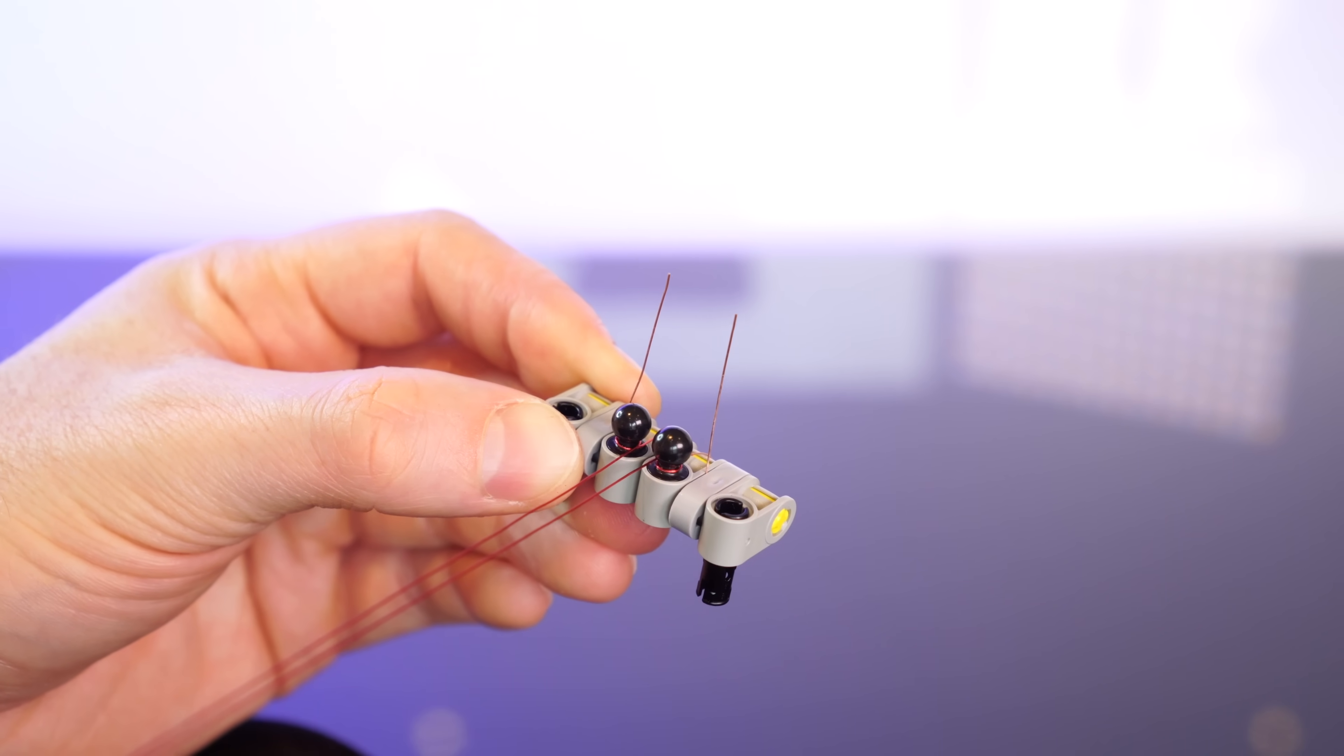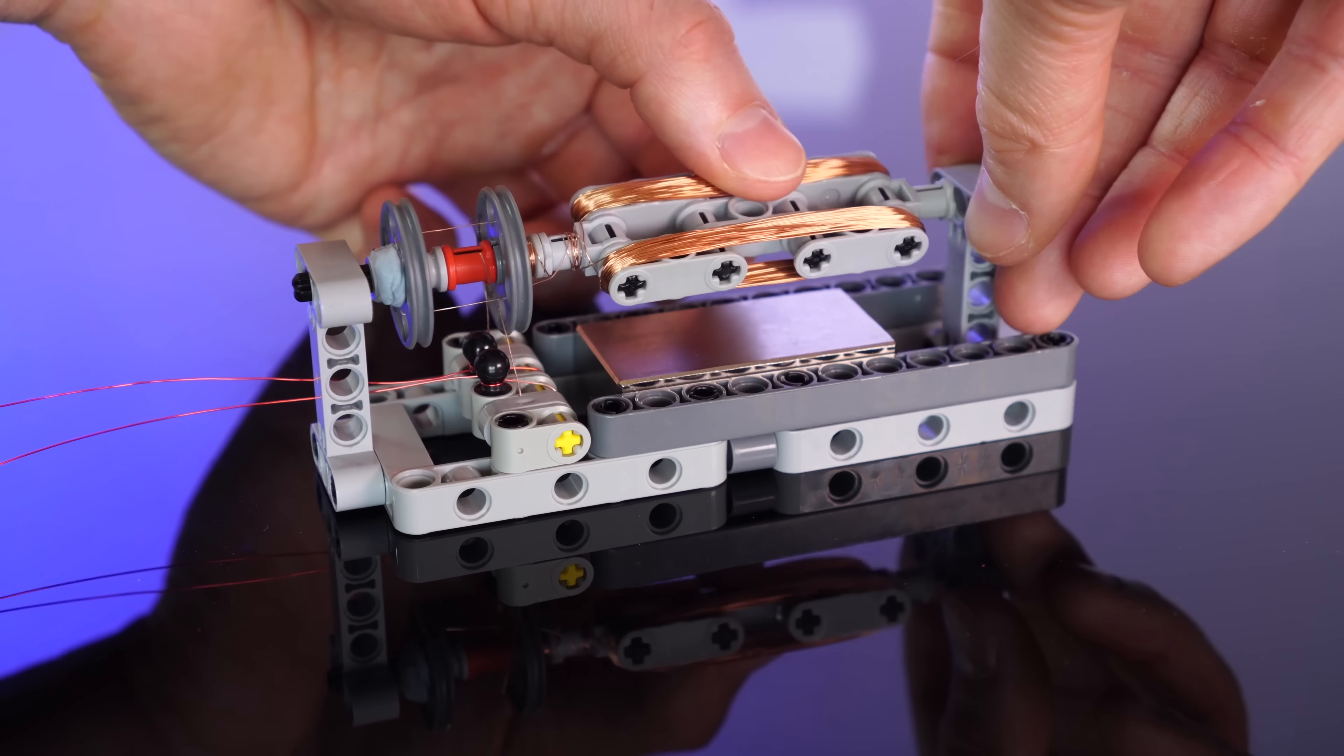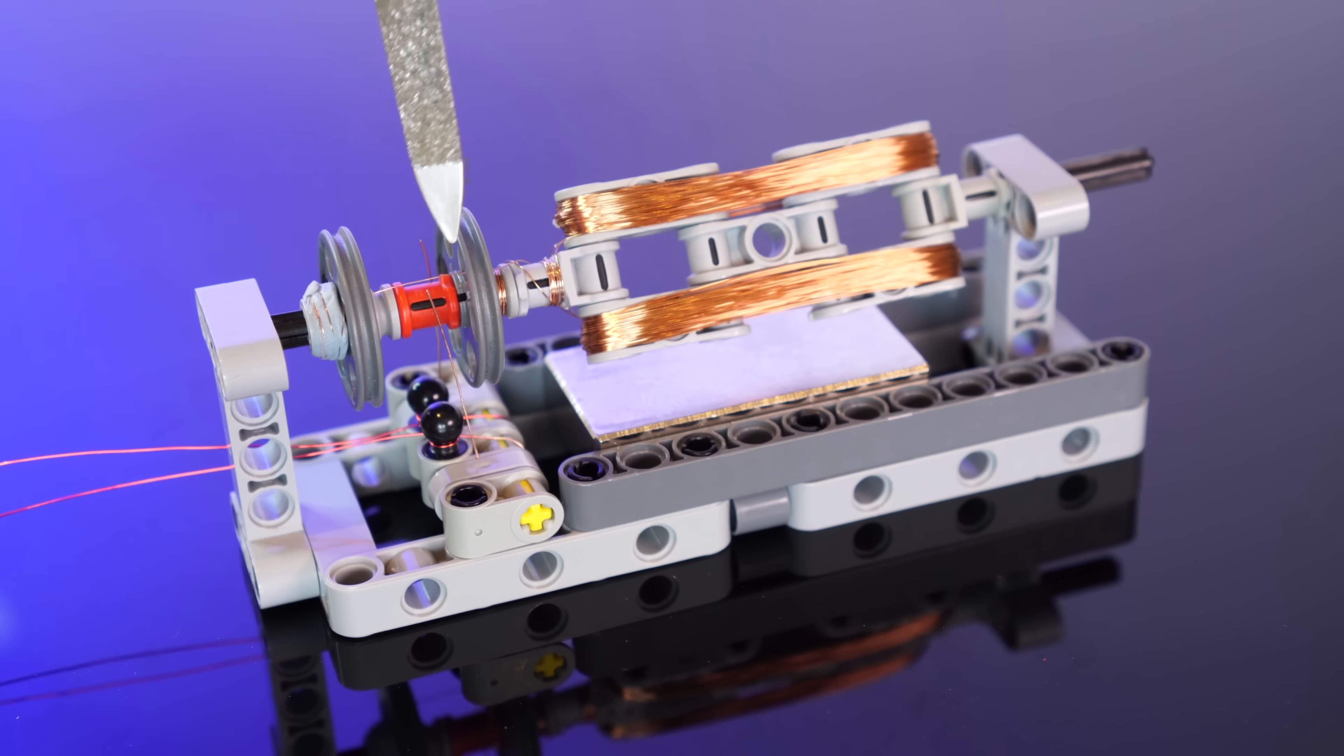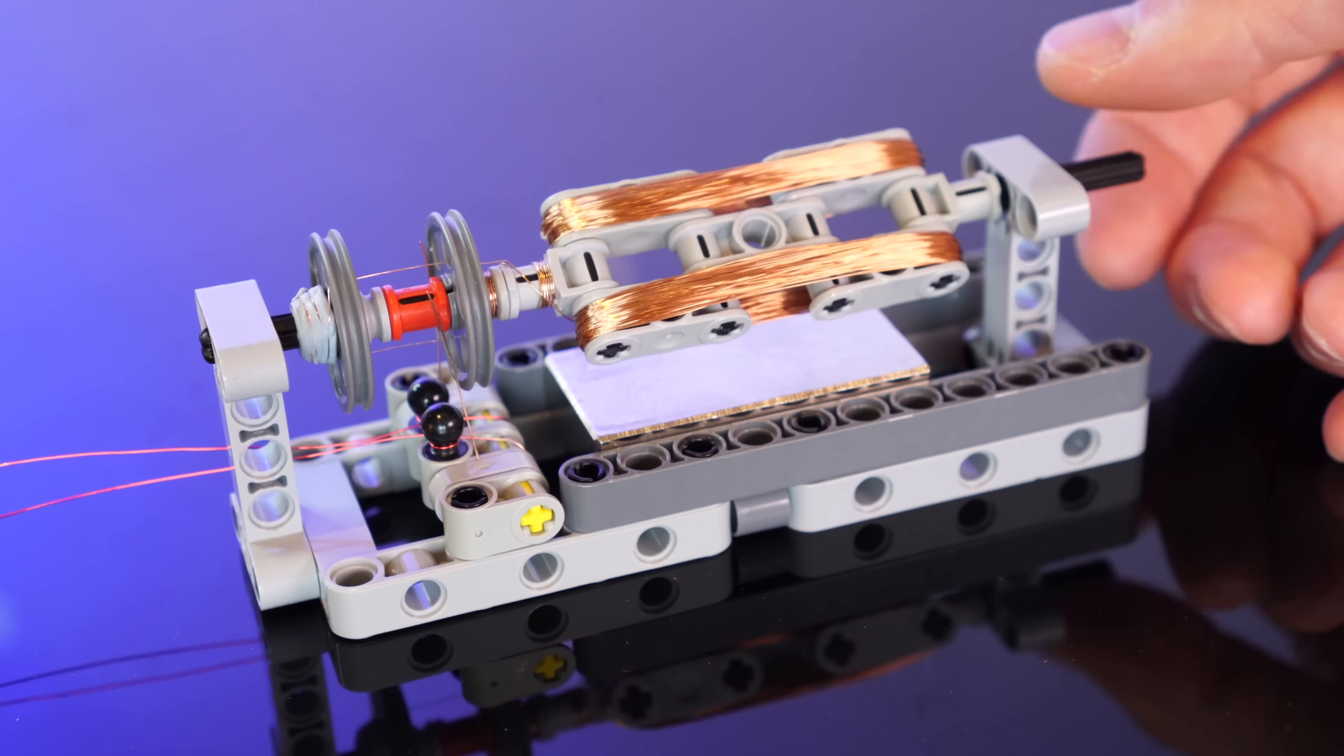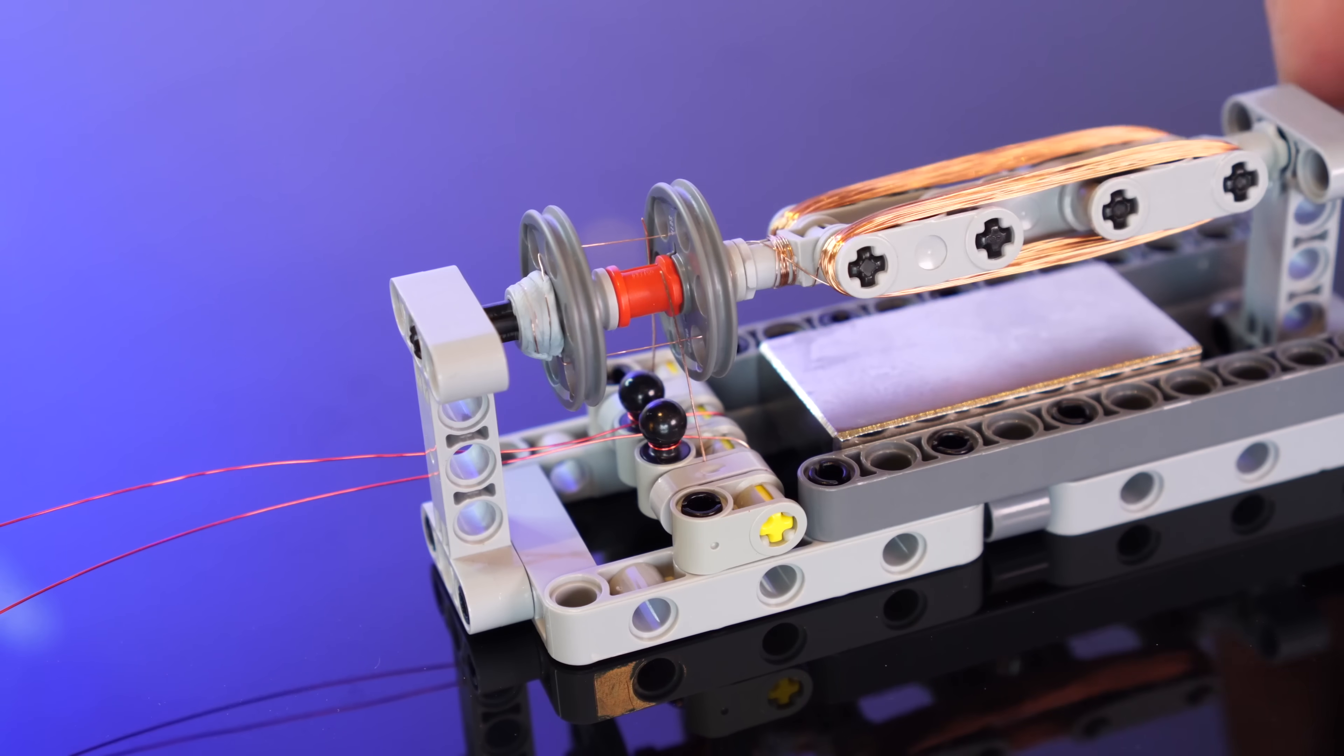And then secure them in place with these little bubble things. Nice. Then we can pop this onto our stator over here. And gently place our rotor into the stator. We can now see the brushes just touching the exposed wires between the Lego wheels. And as the rotor turns, these contacts turn on and off.